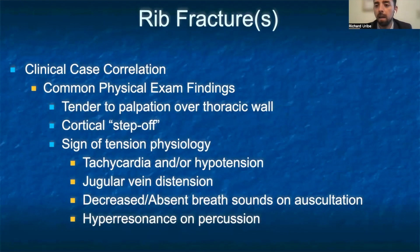Signs of tension pneumothorax include tachycardia, hypotension, jugular venous distension, decreased or absent breath sounds on auscultation, and hyperresonance on percussion.